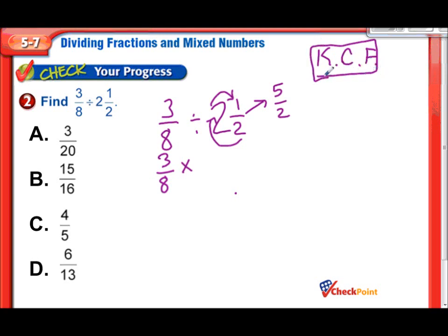Alright, so we have our 3 eighths, we kept that the same. Division becomes times. And now 5 halves, we're going to flip that to its reciprocal, so that's 2 fifths. Looking diagonally, 8 and 2 both can be divided by 2. 8 divided by 2 is 4, and 2 divided by 2 is 1. Now if we multiply across our numerators, 3 times 1 is 3, and 4 times 5 is 20. 3 twentieths. Yes, there's our answer.